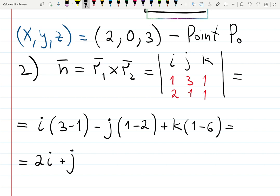And then -5k, or you can also write it down as a vector ⟨2, 1, -5⟩. That is my normal vector. Normal vector, very nice.